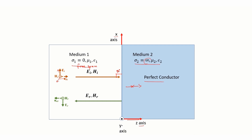The electromagnetic wave that is reflected — we take the direction as minus, that is in the minus x direction. The dot represents it is coming out, that is in the positive y direction, and the electric field is in the minus x direction. So let us see it one by one.